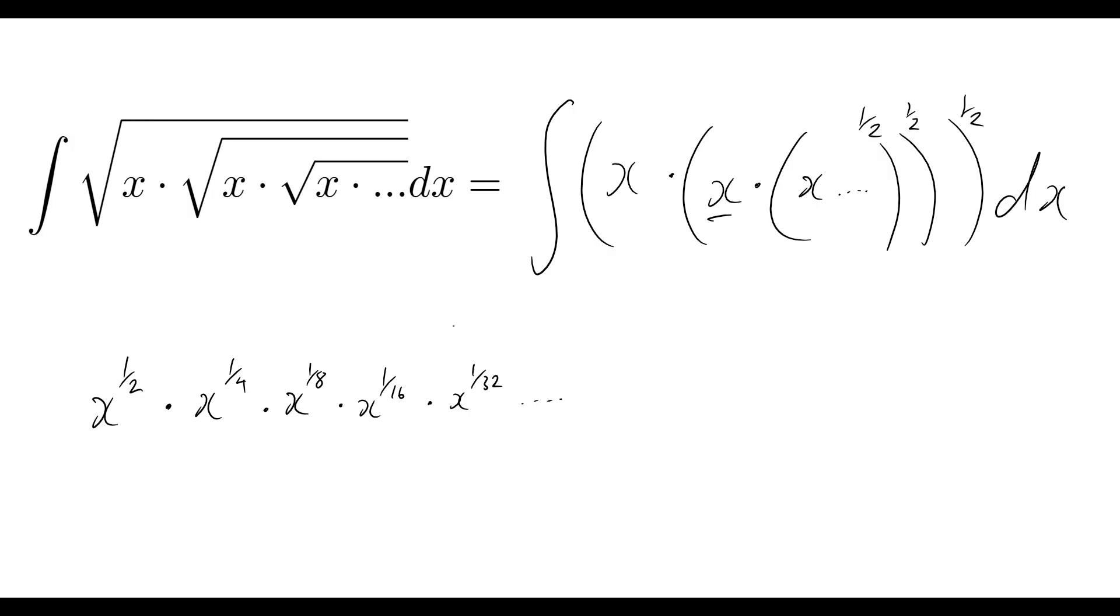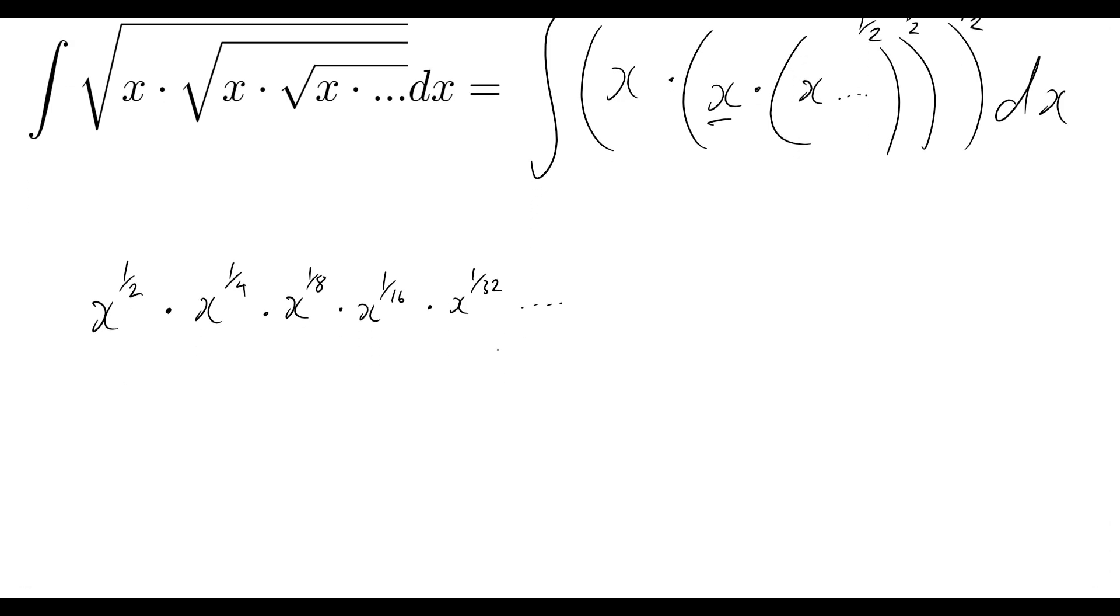Again, index laws. What's going to happen now is we're simply just going to multiply these together, and we know how to do that - we just add the indices. So what do we get when we get a half plus one quarter plus one eighth plus one sixteenth, so on and so forth.